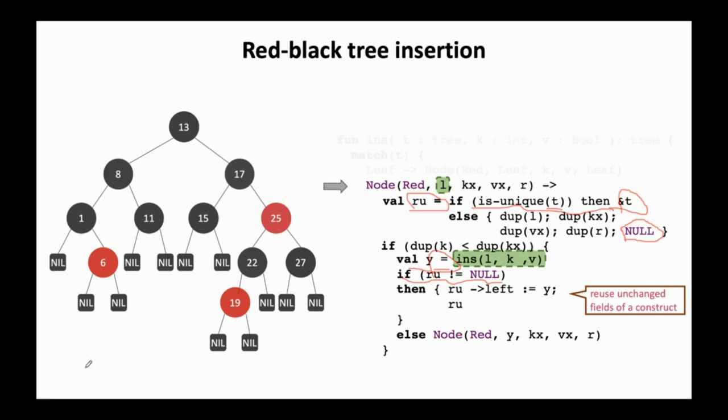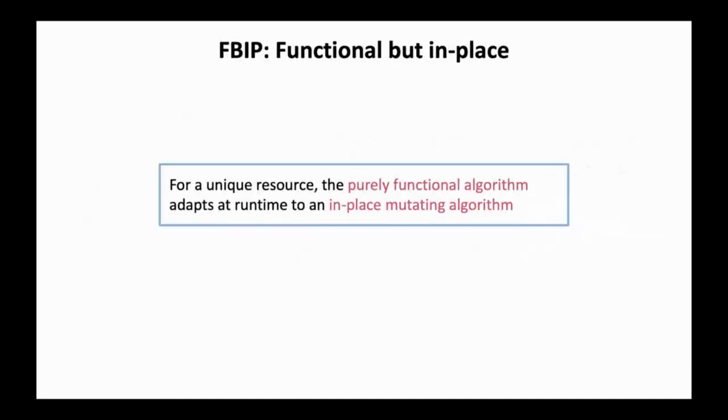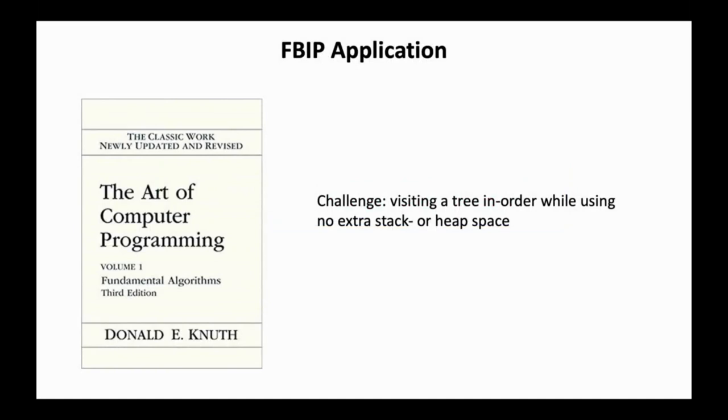Yes. So we can see here how effectively we have reused unchanged fields of a constructor. And we have only updated the changed part. So it turns out we can transform the whole red-black tree insertion with the same strategy. And this example shows us that with Perceus, we can write functional algorithms that dynamically adapt to use in-place mutations when possible. This style of programming leads to a new paradigm that we call FBIP, functional but in place.